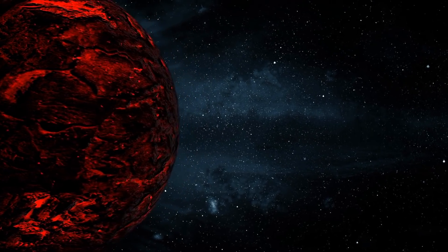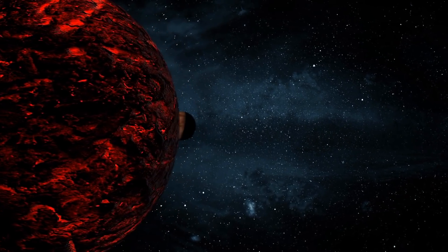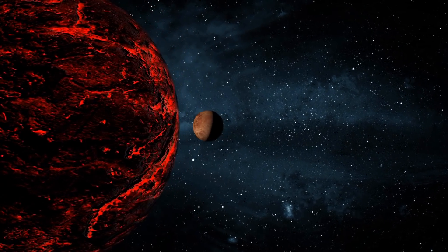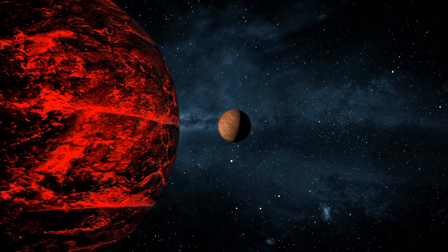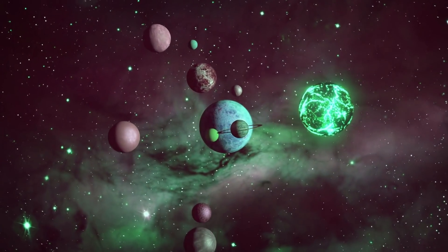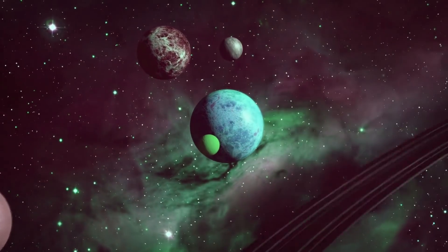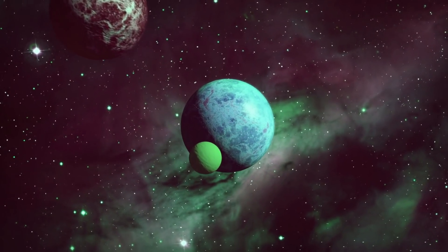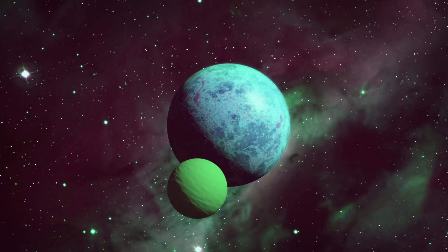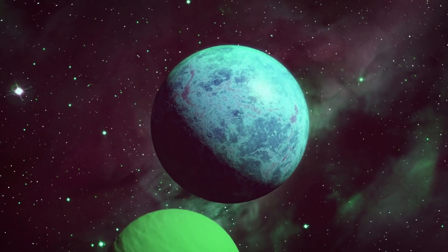Kepler was a space telescope designed to survey a portion of the Milky Way galaxy in search of exoplanets, which are planets outside our solar system. Using data from the Kepler mission and the extended K2 mission, scientists have identified more than 2,800 candidate planets and have confirmed more than 2,600 as bona fide exoplanets.